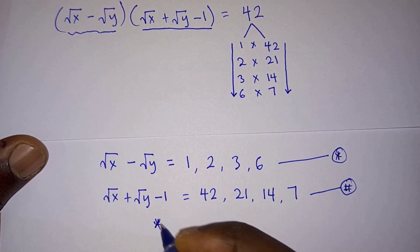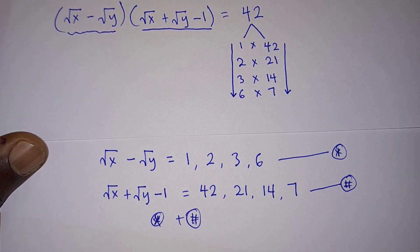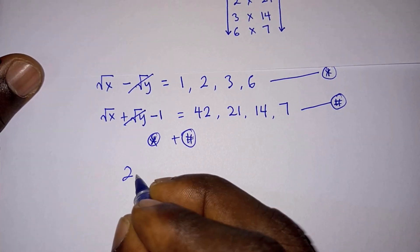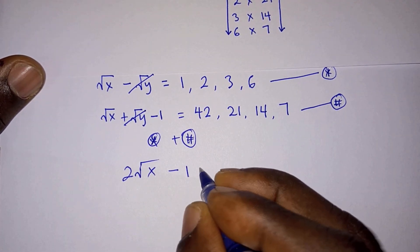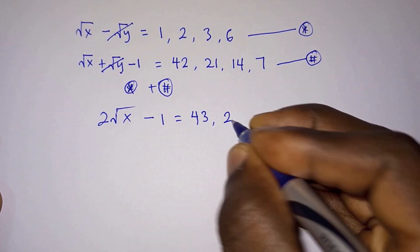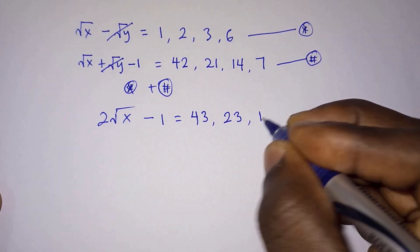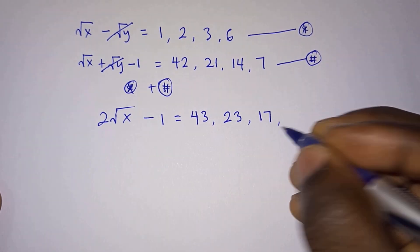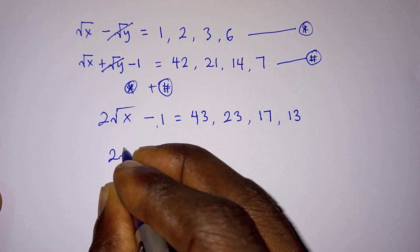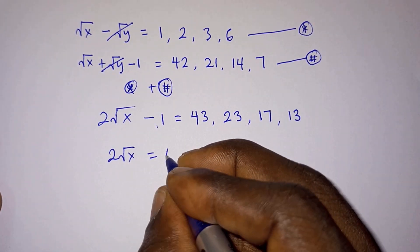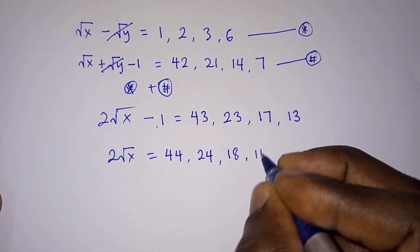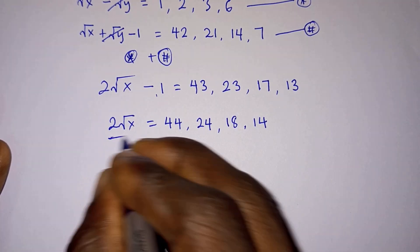Adding equation-star and equation-hash, the √y terms cancel. We are left with 2√x minus 1 equal to 43, 23, 17, and 13 for each case. Moving the negative one to the right, 2√x equals 44, 24, 18, and 14 respectively.